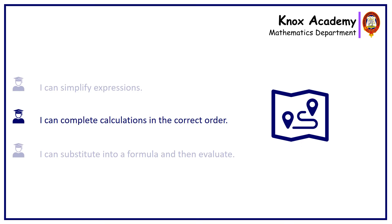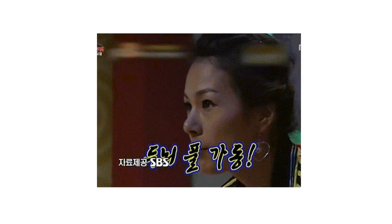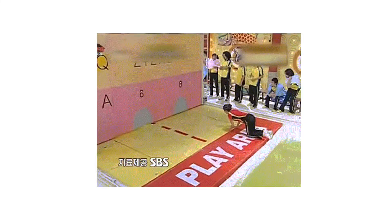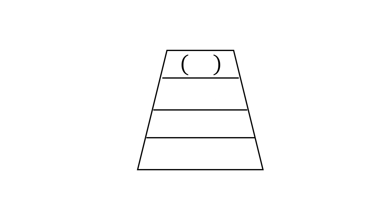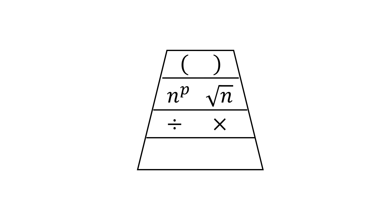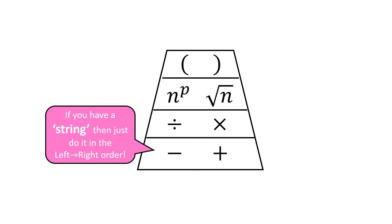Moving on briefly to completing calculations in the correct order — more commonly known as BODMAS or BIDMAS. Being able to apply this through the curriculum, not only in maths but in other subjects, is really quite important. We use a graphic to illustrate the priority order: groups (most commonly brackets) at the top, then powers and roots, then divide and multiply, and finally subtract and add at the bottom. If you have a string that only involves minus and add, you just work left to right.